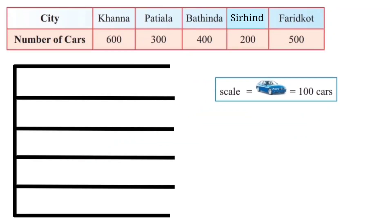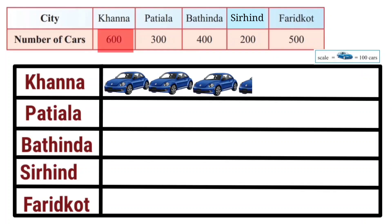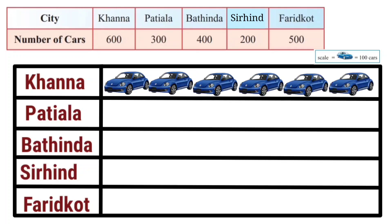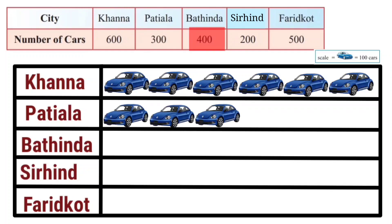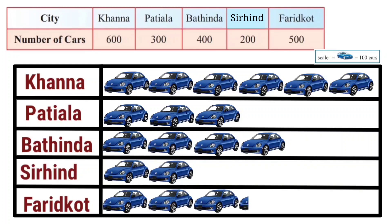So, students, 600 cars sold in Khanna city will be represented with 6 symbols, where 1 symbol is equal to 100 cars. 300 cars sold in Patiala city will be represented with 3 symbols. Similarly, for 200 cars, we use 2 symbols and for 500 cars, we use 5 symbols.